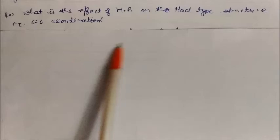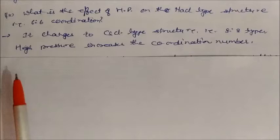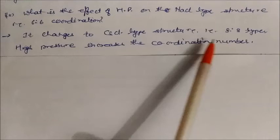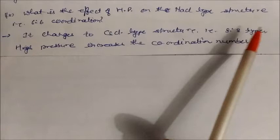What is the effect of high pressure on the NaCl type of structure, which has 6:6 coordination? Under high pressure, it changes to the cesium chloride type structure, which has 8:8 coordination. High pressure increases the coordination number, so the 6:6 structure of NaCl changes to the 8:8 structure of cesium chloride.